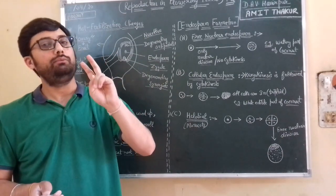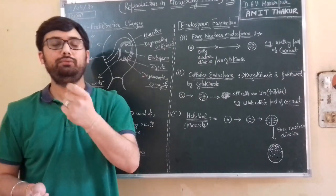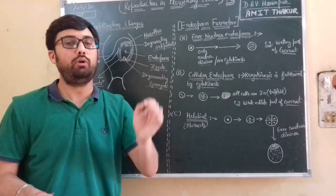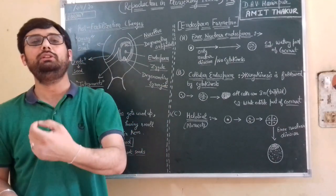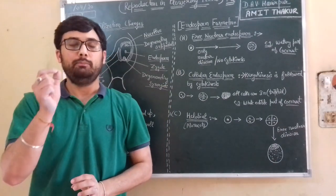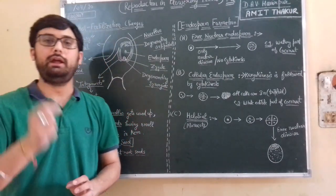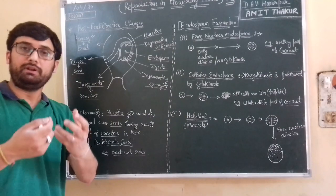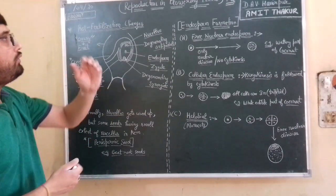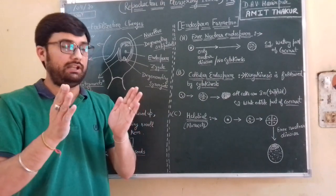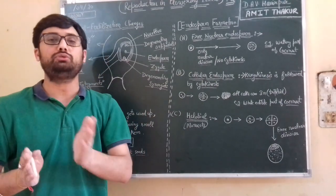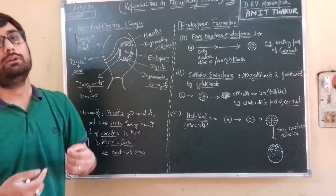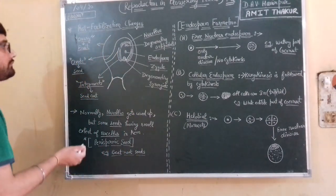In the last lecture on double fertilization in angiosperms, we have two male gametes. One male gamete fuses with an egg cell to form a zygote, and the second male gamete fuses with two polar nuclei to form the primary endosperm nucleus or triploid endosperm. That endosperm gives nourishment to the growing embryo. So fertilization has produced a zygote and endosperm — now we will study what happens after fertilization.